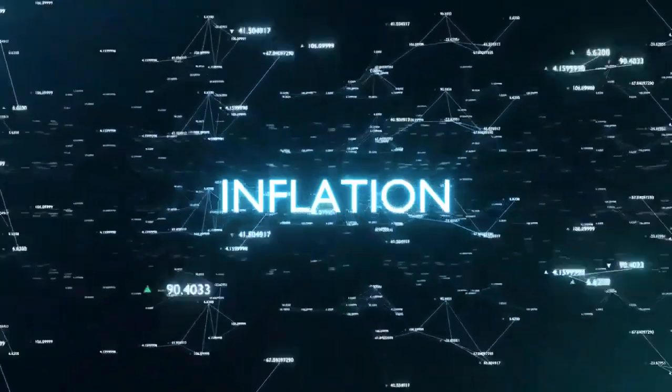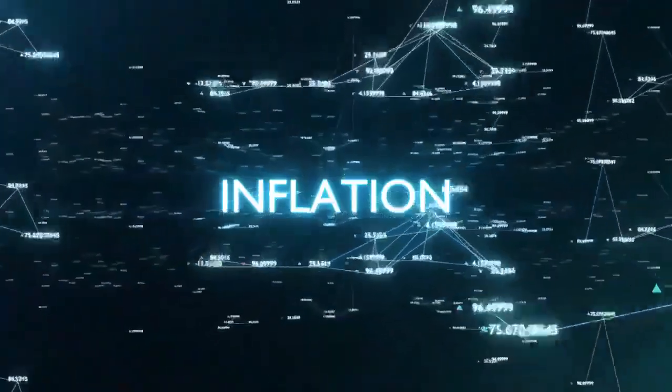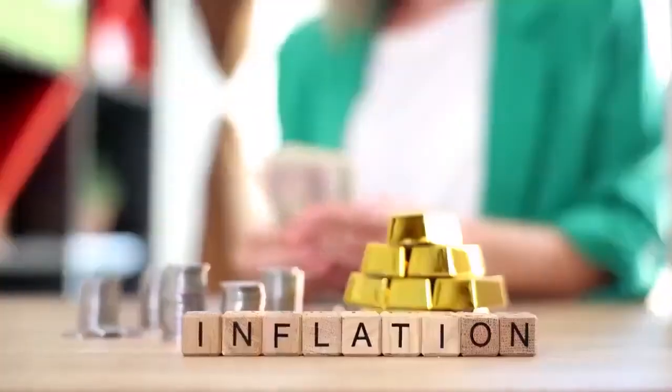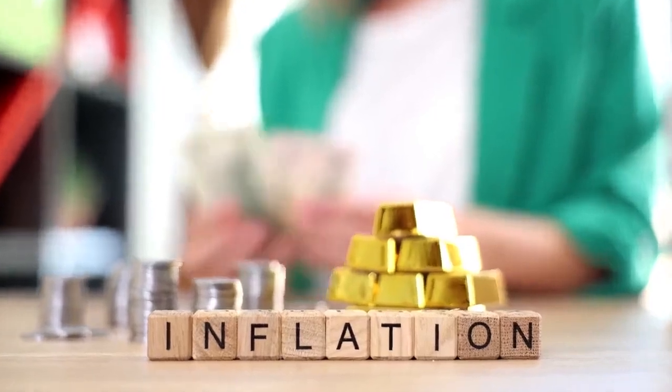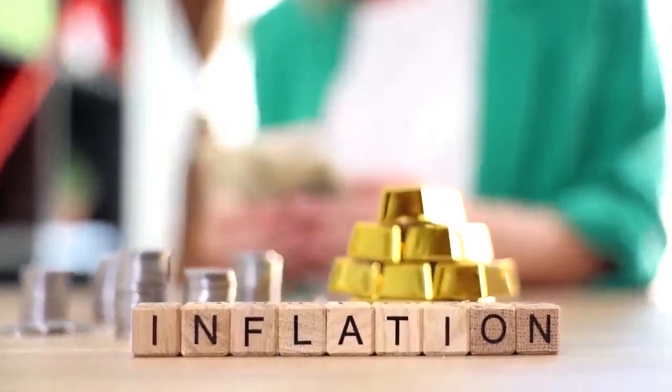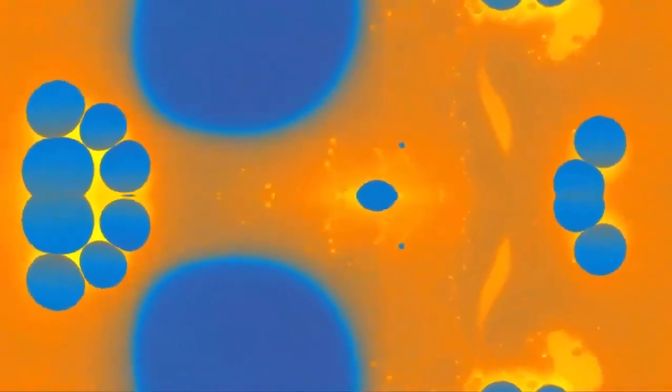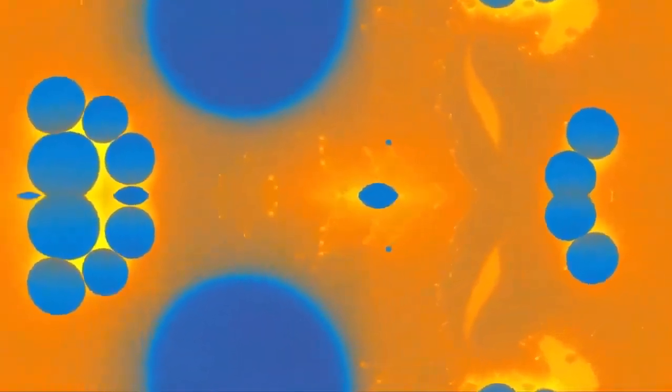At times, quantum fluctuations akin to those shaping the universe's structure cause certain areas where inflation ceases, resulting in a hot Big Bang. However, these regions are far fewer compared to those where inflation persists indefinitely. Notably, no two separate regions with Big Bangs will ever overlap because the expanding universe drives them apart. Despite its appeal, eternal inflation has limitations.